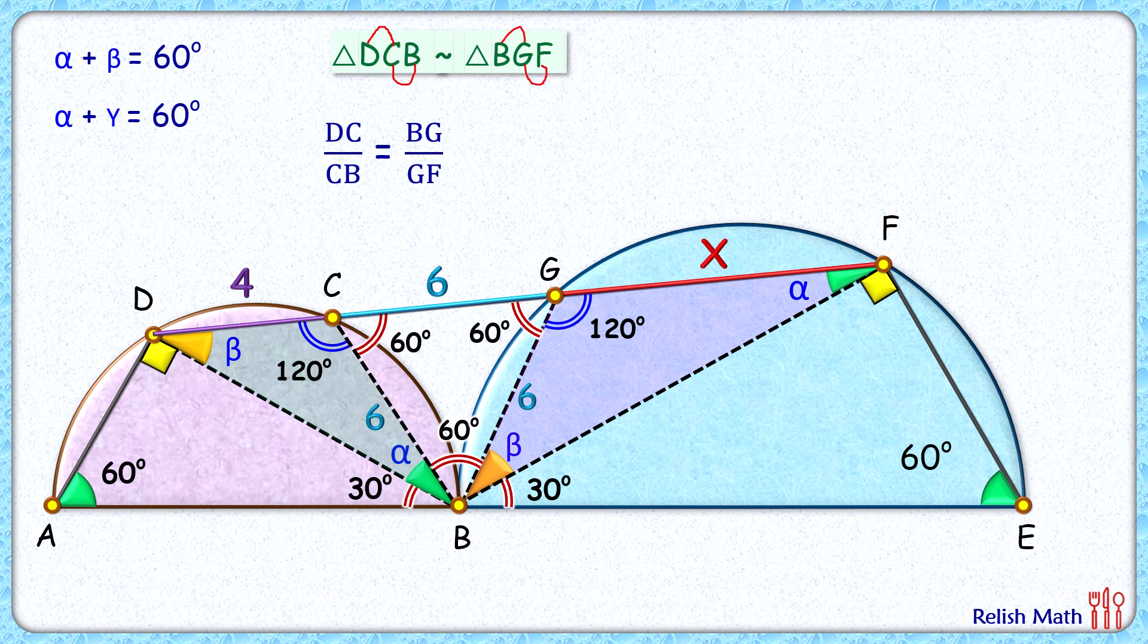Putting the values here, DC is 4 and CB is 6. Same way, your BG is 6 and GF is X. Cross multiplying and simplifying, it will get value of X as 36 by 4 or 9 centimeter, and that's our answer.